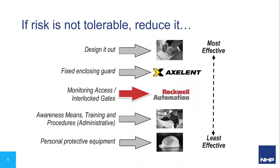This is where monitored access and interlocking becomes most important. After all guarding measures, there may still be some residual risk. We could instruct people using the machine through training programs and signage — they don't do much, but there's something. And lastly, when all options are exhausted, there's PPE — personal protective equipment — wrap them up in chain mail and bubble wrap and hope for the best.